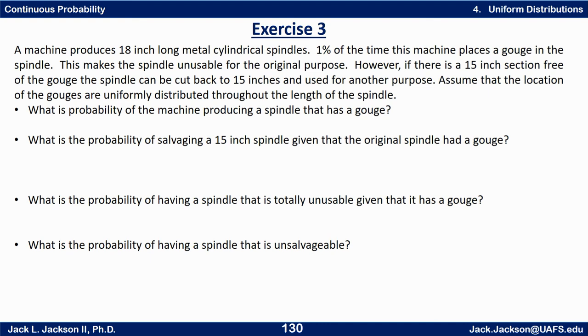See if you can answer these questions. What is the probability of the machine producing a spindle that has a gouge? What's the probability of salvaging a 15 inch spindle given that the original spindle had a gouge? What's the probability of having a spindle that is totally unusable given that it has a gouge? And what's the probability of having a spindle that is unsalvageable? Okay, see if you can work out those. Think about this one for a little bit and then come back. Press pause now.